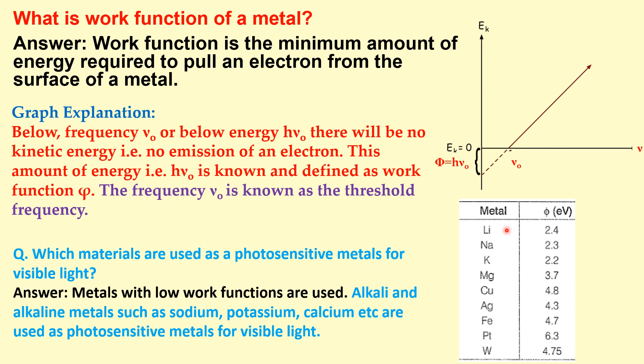In this table we can see there are different metals like lithium, sodium, potassium, and magnesium, and these have the work function in electron volts given. For lithium it is 2.4, sodium 2.3, potassium 2.2, magnesium 3.7, and it is increasing. For platinum it is highest 6.3. So it is very difficult to eject the electrons from the surface of metals like platinum or tungsten or iron because they have higher work function. That's why the lower work function metals are used as the photosensitive metals.